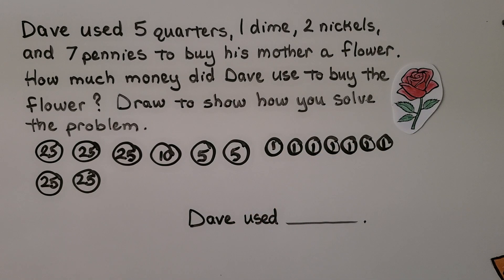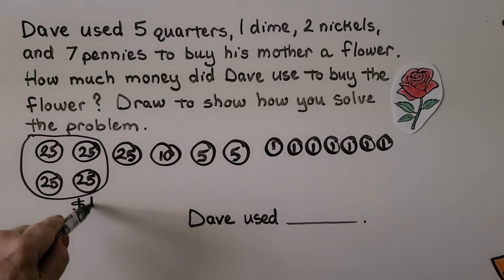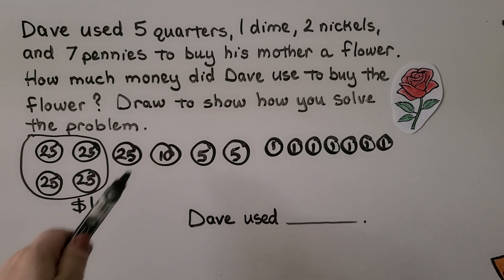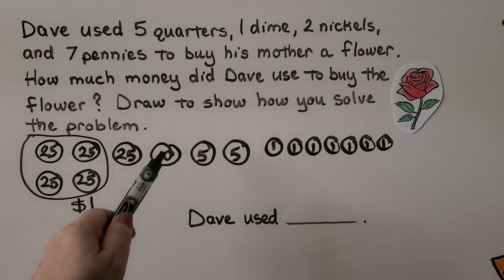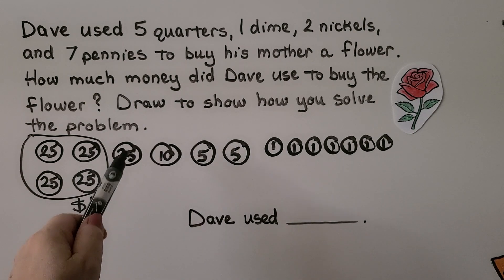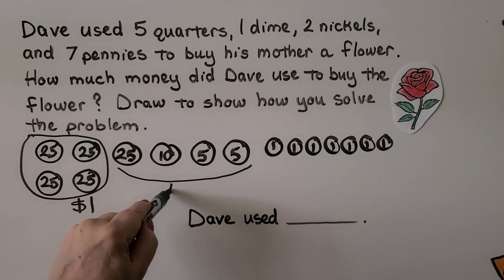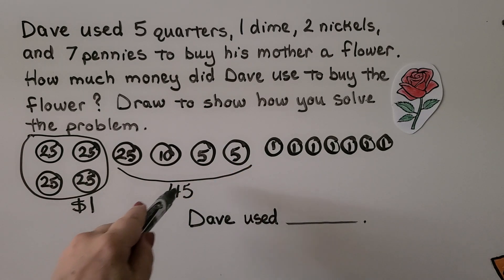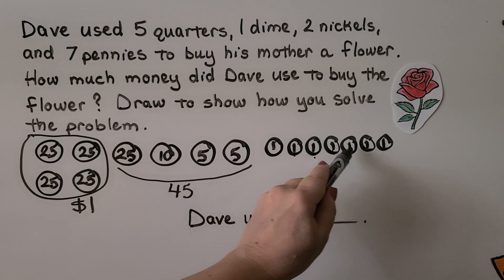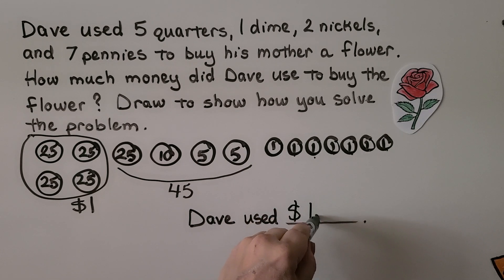Now we count. Right away I see four quarters makes one dollar. Then for the remaining cents: 25 and 10 is 35, and two fives make 10, so we have 25, 35, 45 — all of those together are 45 cents. Then the pennies: 46, 47, 48, 49, 50, 51, 52. It's one dollar and 52 cents.